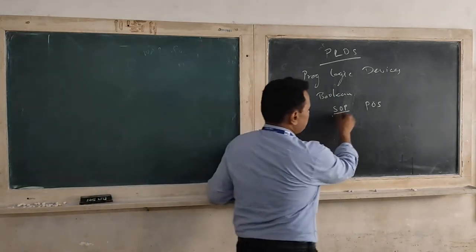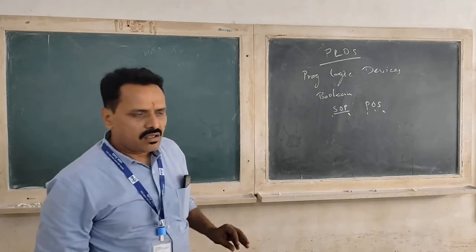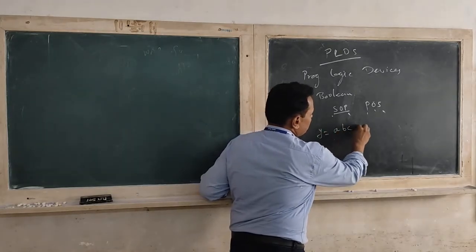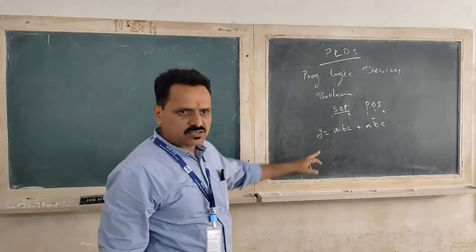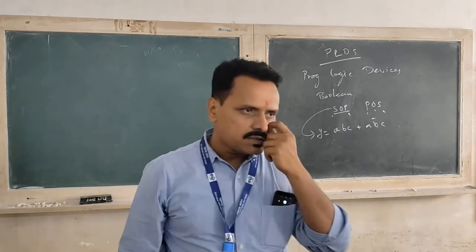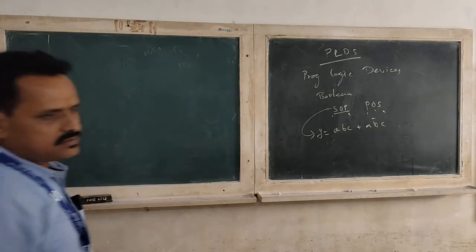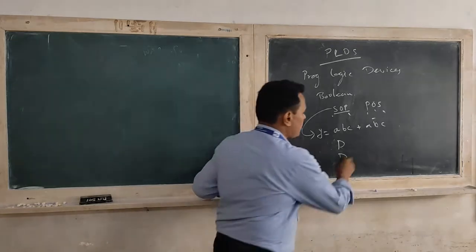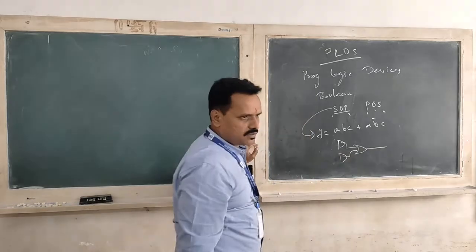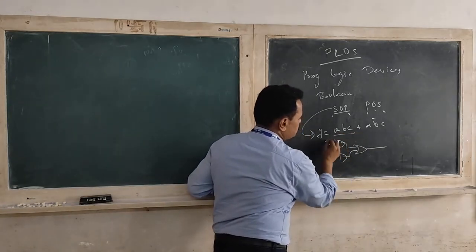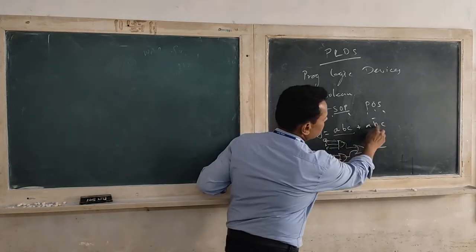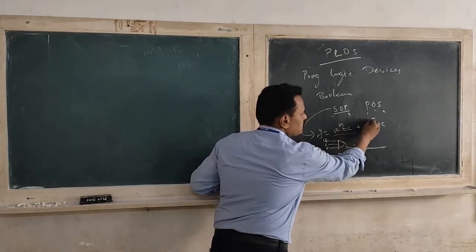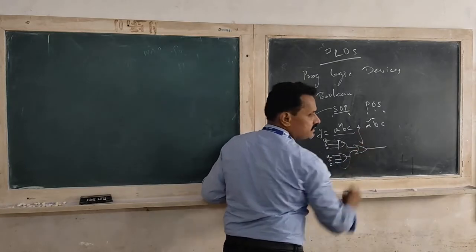SOPs means sum of product, POS means product of sums. If you write an equation, it could be like this — this we call it as sum of product. And if you want to realize this equation by using gates, then first you require an AND gate and then the OR gate. This AND gate will be having inputs A, B-bar, C. Two products, and then those products have been summed — that is why we call it as sum of product.